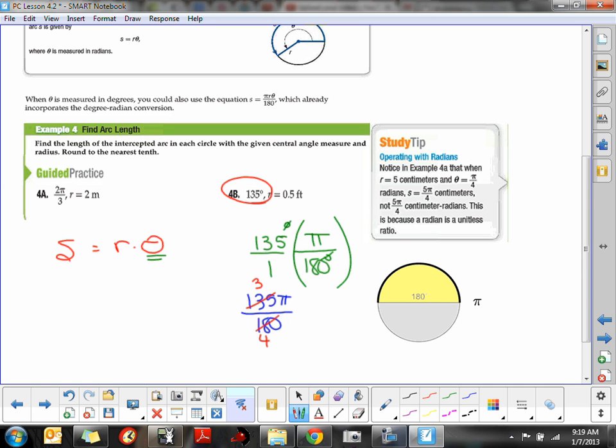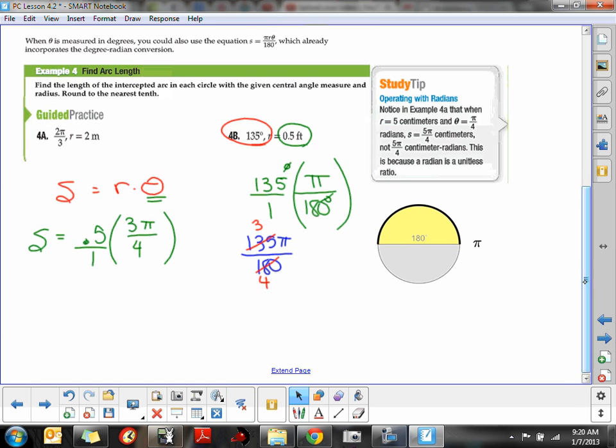So plugging those values in, we can find our arc length, S equals... In this one, our radius had a length of half a foot. We're going to take it times the radian angle measure, which is 3π over 4. And then we can multiply those together and find it to the nearest tenth. Since that's what the directions are, I guess we'll just go ahead and multiply those out and round it.